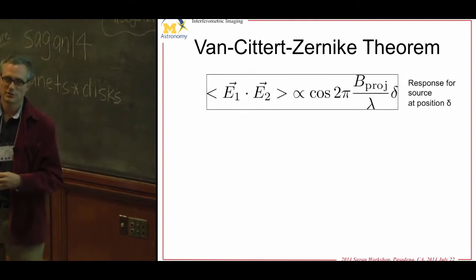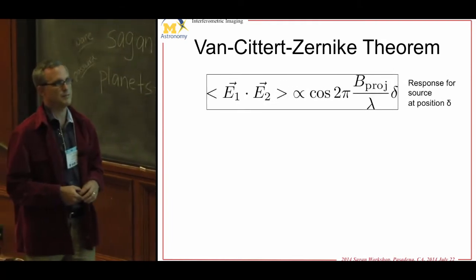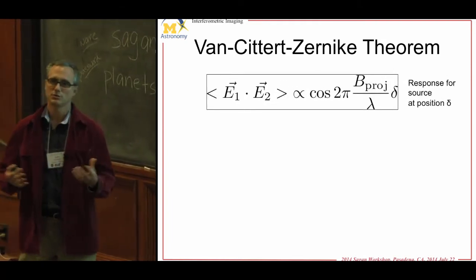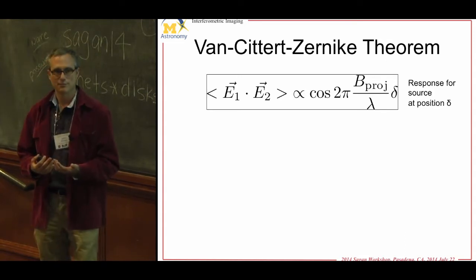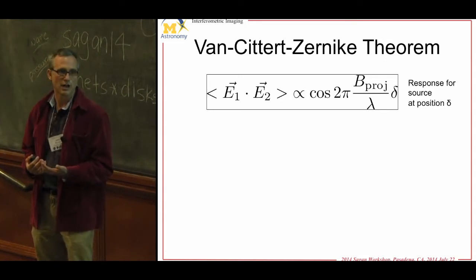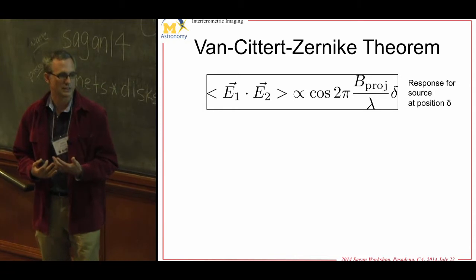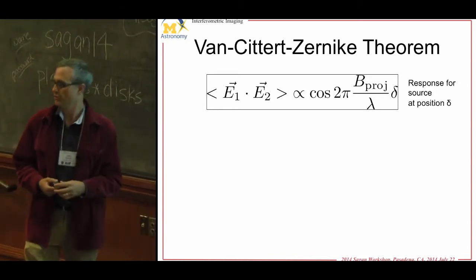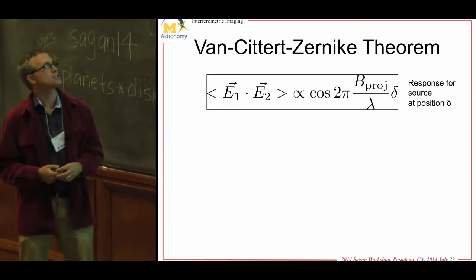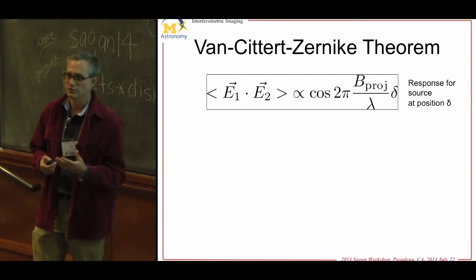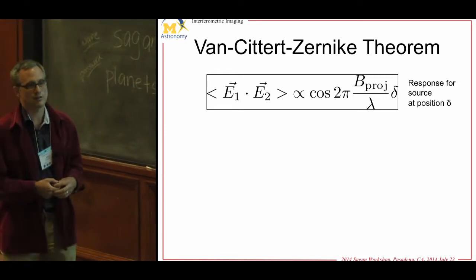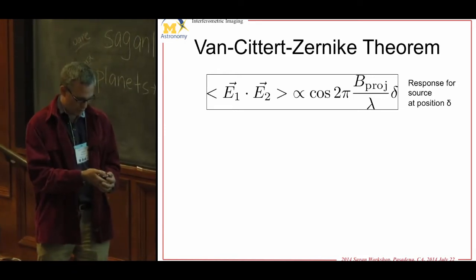I'm not going to derive the Van Zernike theorem in interferometry for time. It's more important to get the spirit of what interferometers are useful for, since there are facilities with aperture masks you can apply for time on. The basic idea is that the strength of interference at the center of your interferometer — at zero delay — is related to where the object is in your field of view.